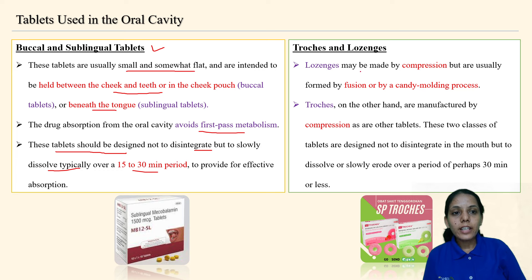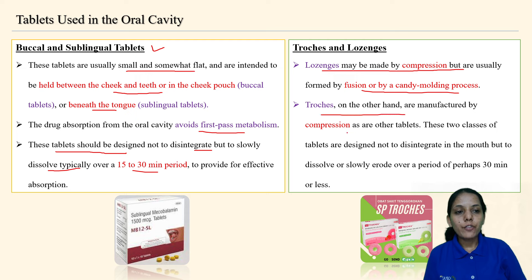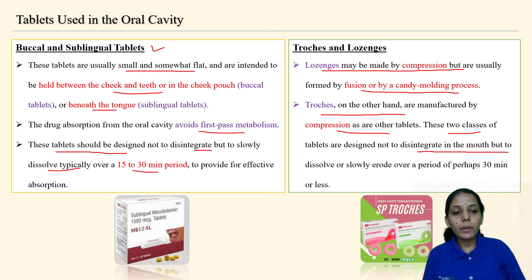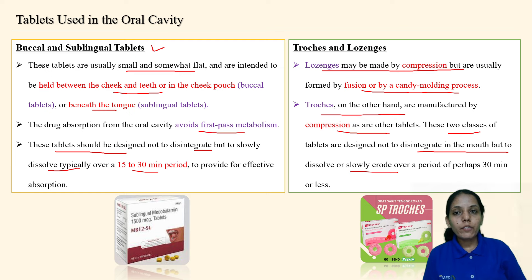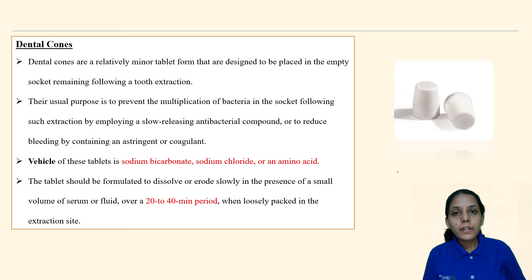Troches and lozenges: lozenges may be made by compression but are usually formed by fusion or candy molding process. Troches, on the other hand, are manufactured by compression. Both classes are designed not to disintegrate in the mouth but to dissolve or slowly erode over a period of 30 minutes or less.